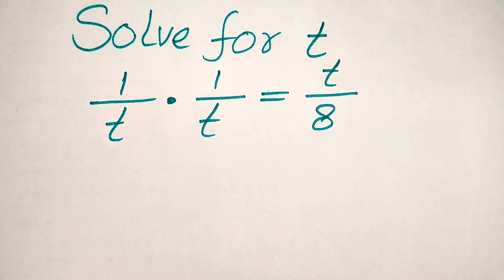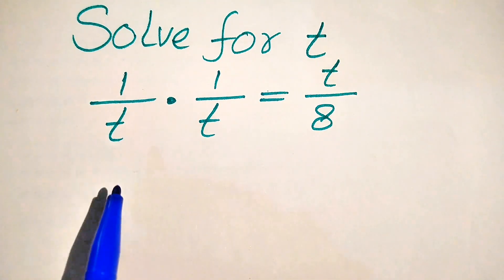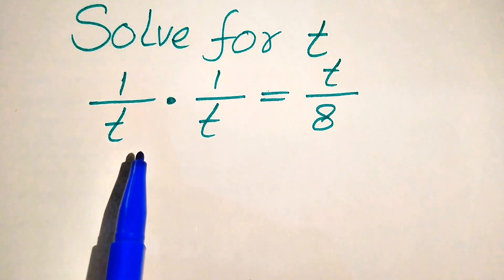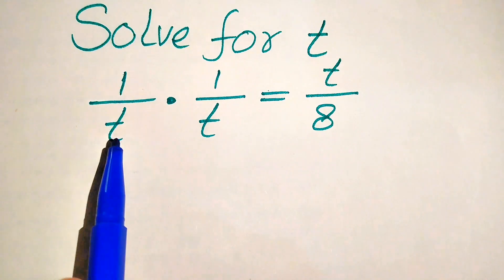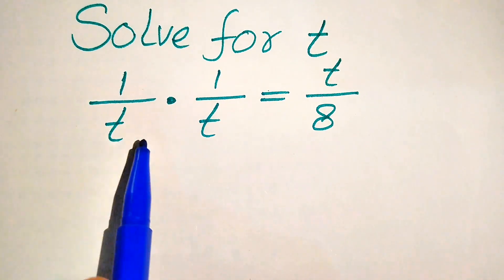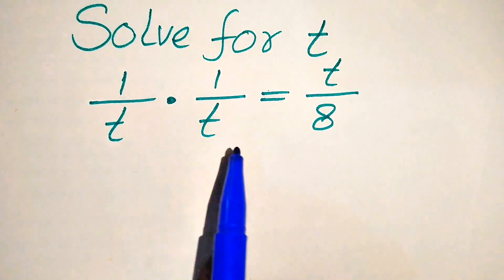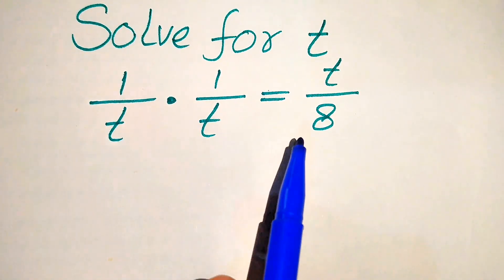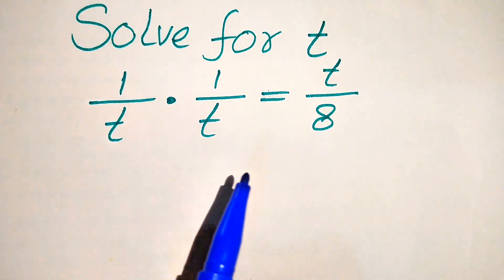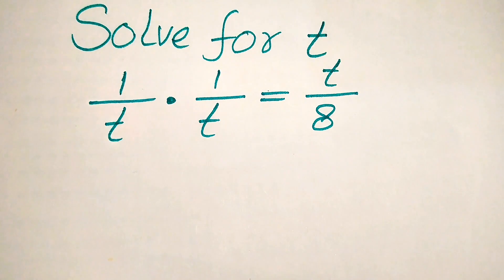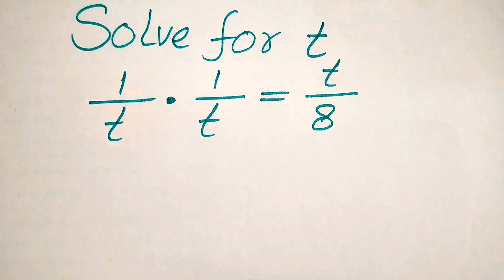Hello everyone. How to solve this problem for the values of t if we have 1 over t multiplied by 1 over t is equals to t over 8, and we solve this problem for the values of t.